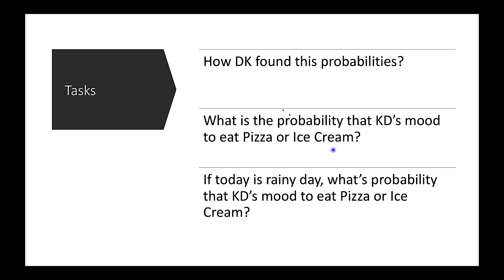Now we'll ask three questions: How did DK find these probabilities? What is the probability that Katie is moved to eat pizza or ice cream today if today is a rainy day? And what is the probability that Katie is moved to eat pizza or ice cream — that we'll see in the next class.